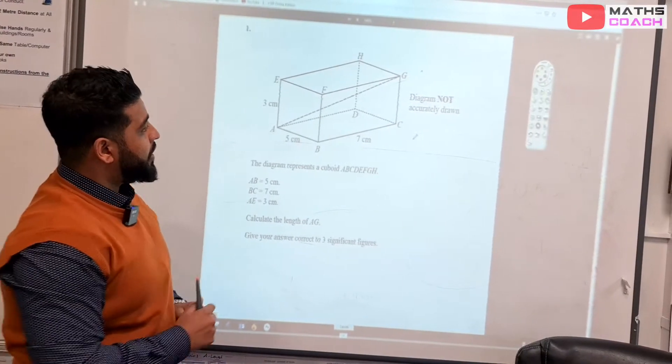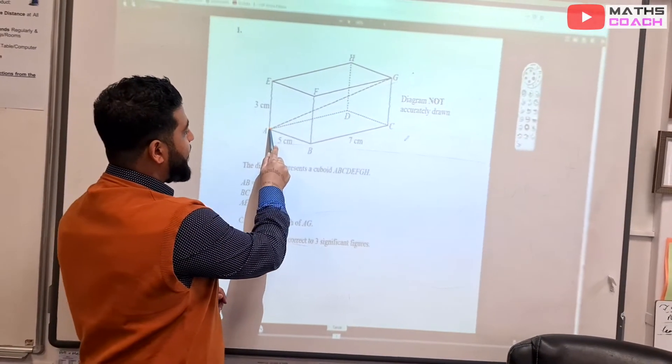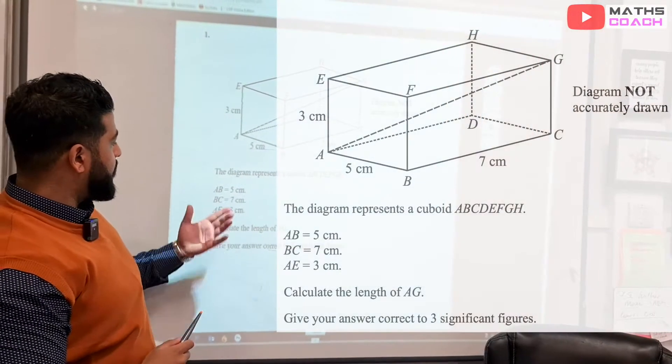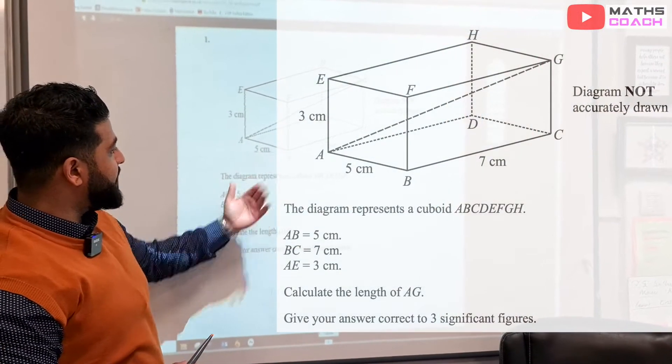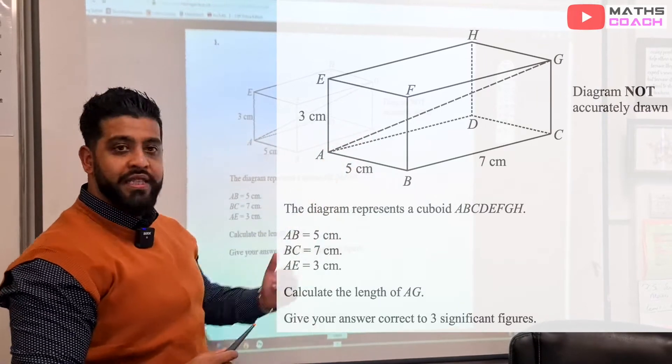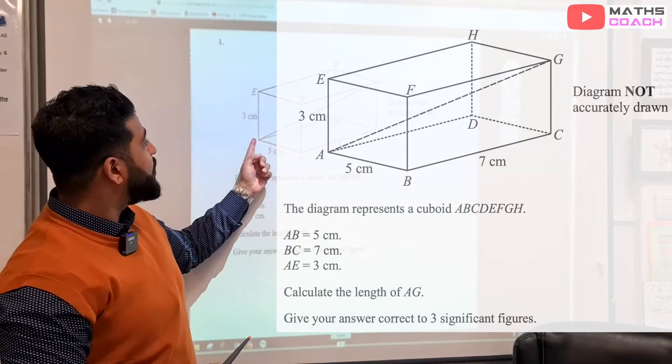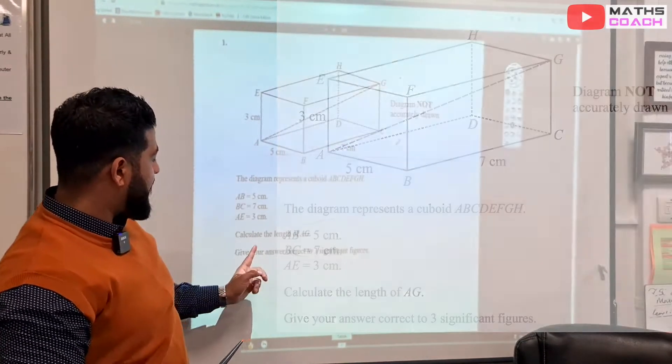So we are asked to find the length between A and G. We are told that A to B is 5cm, B to C is 7cm, and A to E, which is up here, is 3cm.